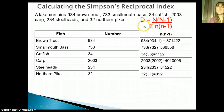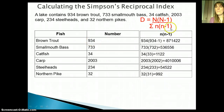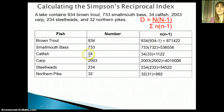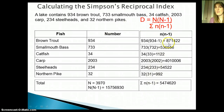The next thing is to figure out the n times (n minus 1) part for each species so I can sum them up. For brown trout, n is 934, and n minus 1 is 933, so 934 times 933 equals 871,422. For the next species, 733 times 732 equals 536,556. For catfish, 34 times 33. I add up all these values to get the sum, which comes out to 5,474,620 — that's the bottom of my equation.